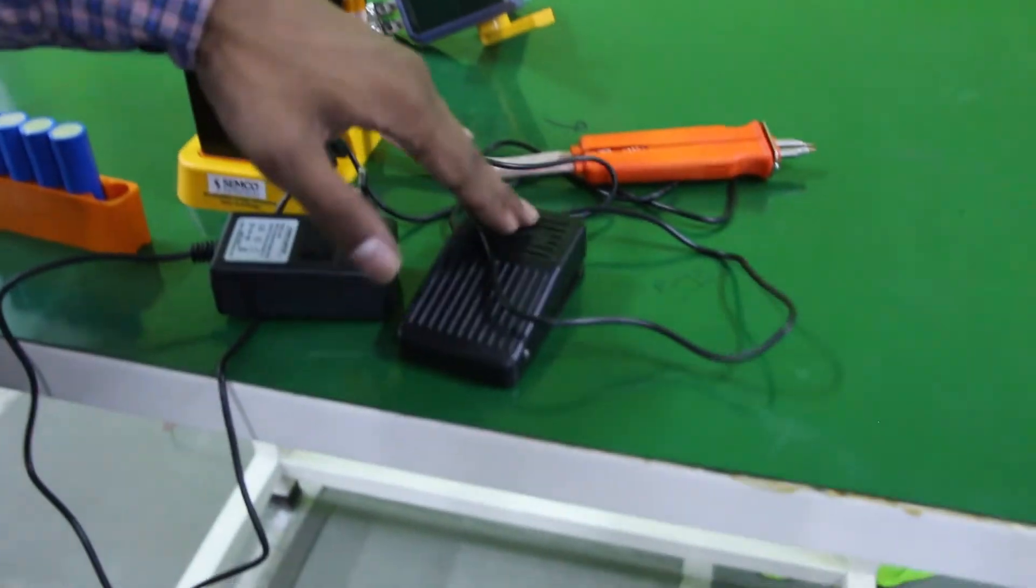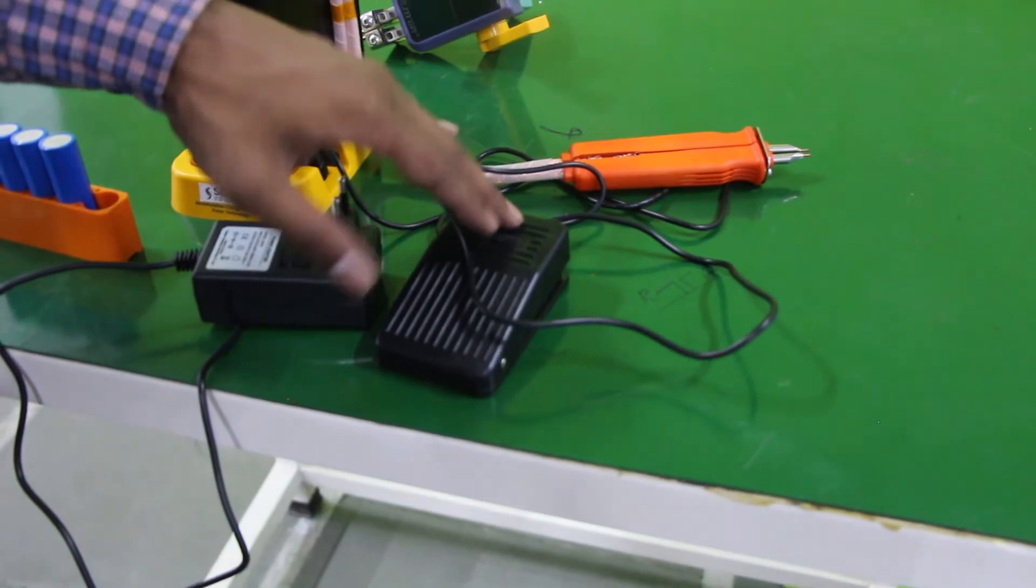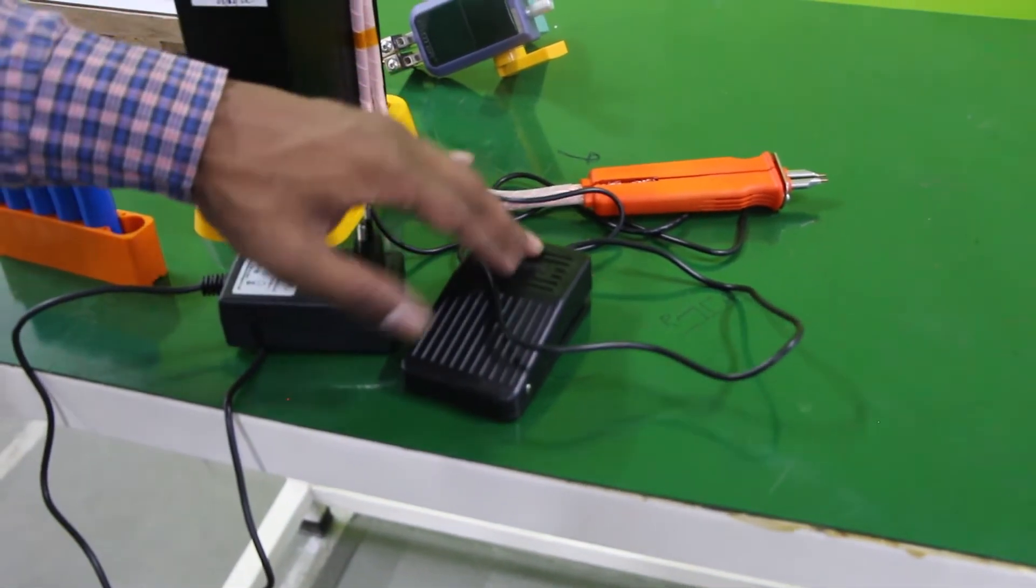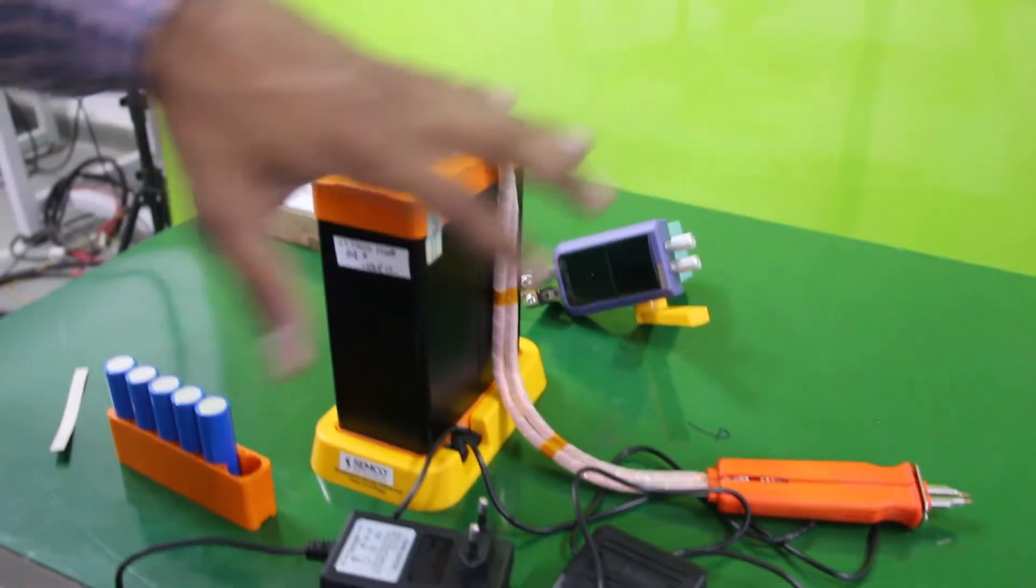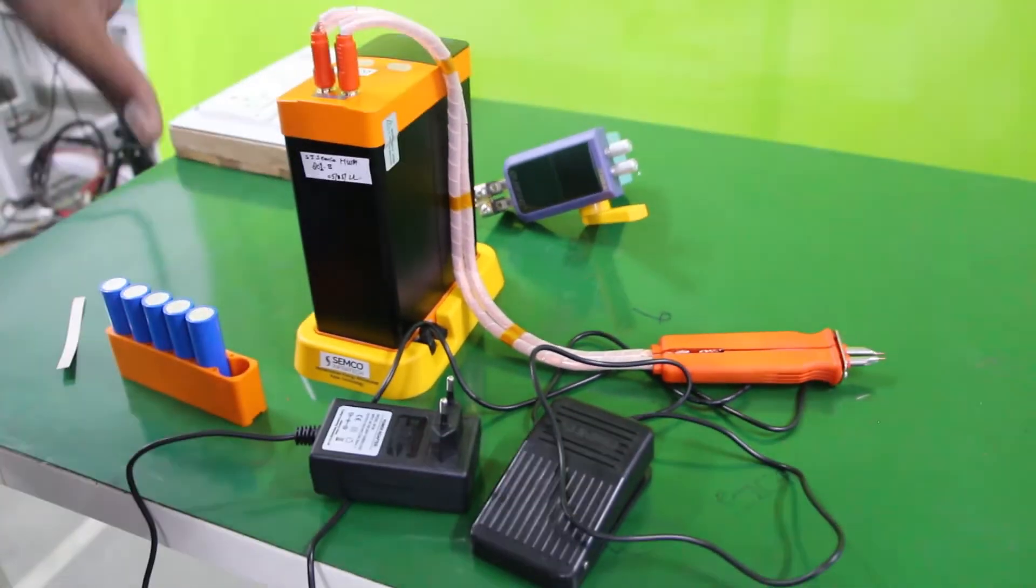And another one is the foot control welding push button. These are the four components in this welding machine.